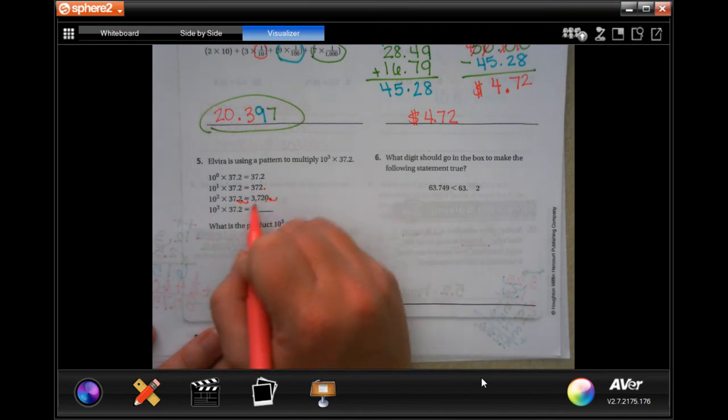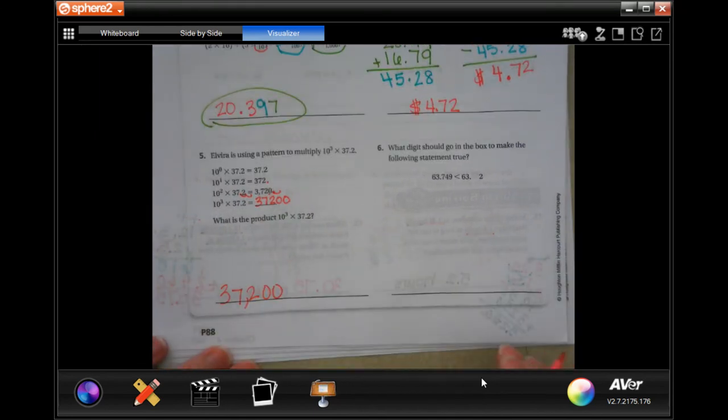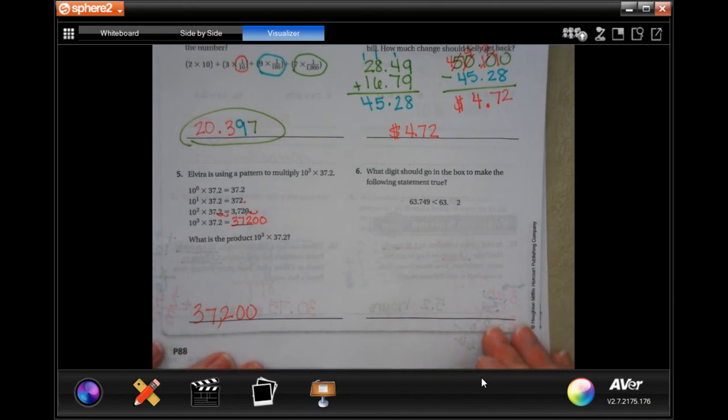So three, seven, two, zero, zero: thirty-seven thousand two hundred. This one you don't need a word answer for because it is not that kind of question.